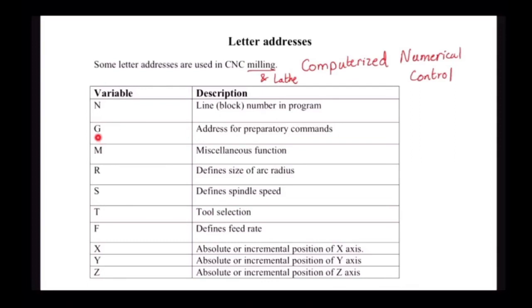The second variable is G, and this is why it's called G-code. Sometimes they call it G and M-codes, but typically it's called G-code. G is used to address preparatory commands — this is to prepare the machine to do any function. We will see later what are the available commands.